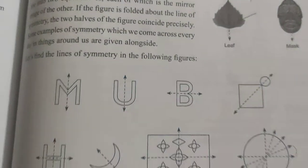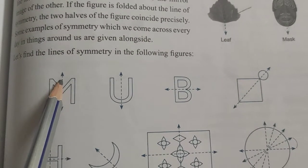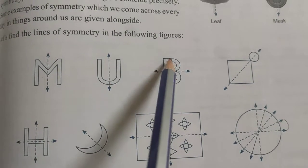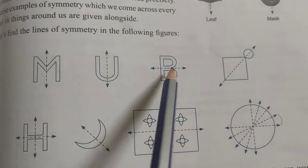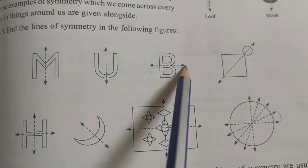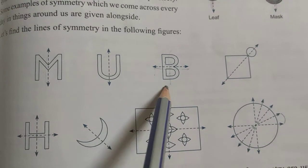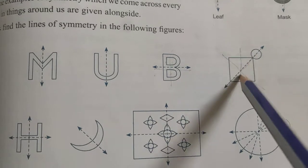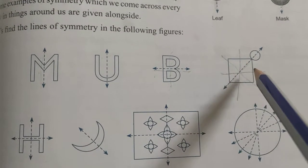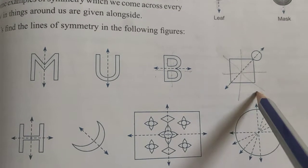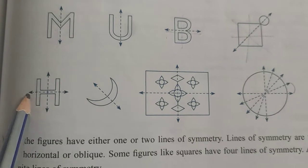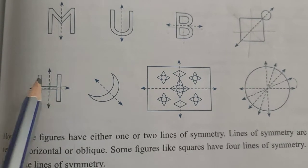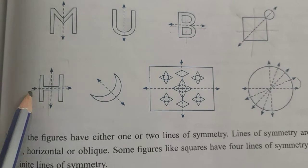For example, if I fold the letter M from the center, the whole thing lays on itself. For U and B, folding from the vertical center gives equal halves — they are reflections of one another. For a square, you can fold from four different lines, so there are four lines of symmetry. For H, there are two lines of symmetry — one horizontal and one vertical.